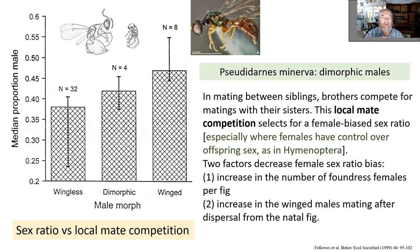Mating between brothers and sisters promotes unequal sex ratios. We know the theory behind one-to-one sex ratios for panmictic populations, but the more related the mating individuals are, the more it is favored to have a biased sex ratio in favor of females. This is a nice model to empirically examine that theory.